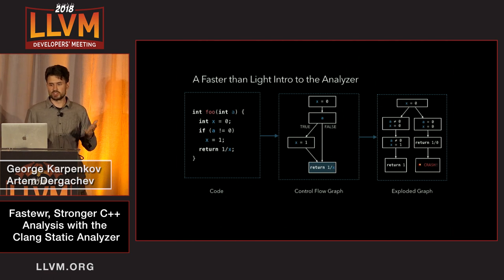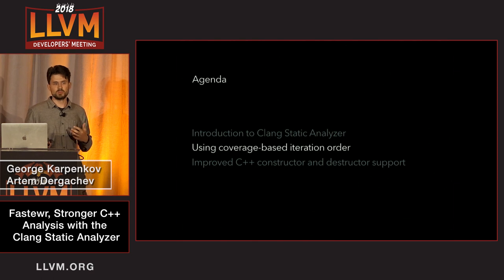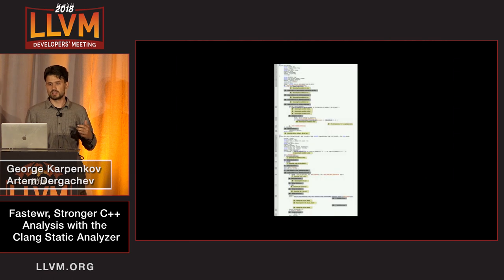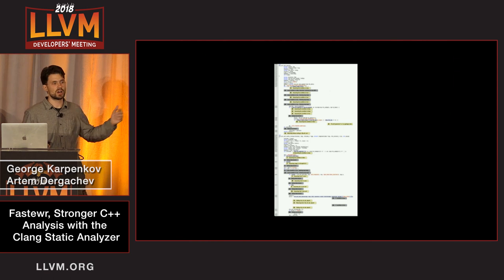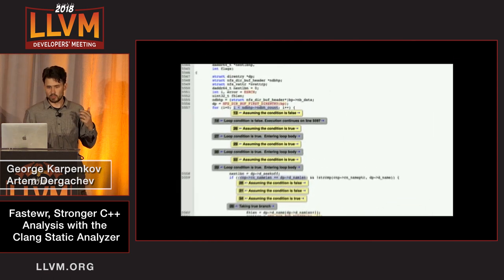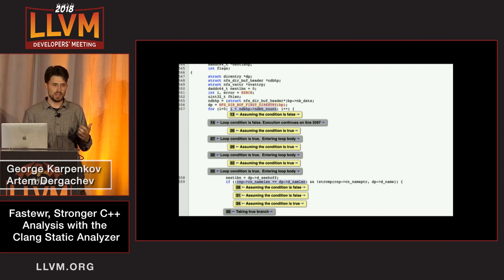With that short introduction, I'm going to talk about the first contribution, which is using a coverage-based iteration order. The motivation for this contribution, which you've probably seen if you've looked at many Clang Static Analyzer reports, is having very long, very hard-to-comprehend reports. The common theme amongst such reports was needless looping around a certain loop start.